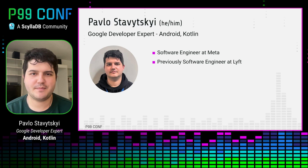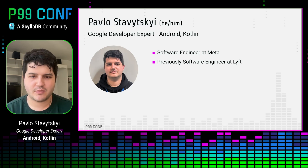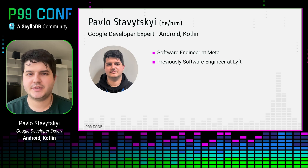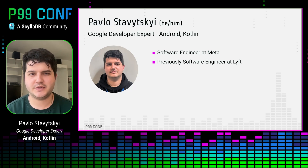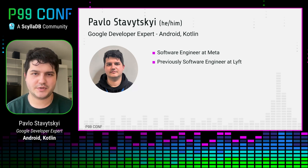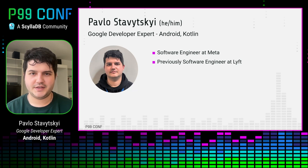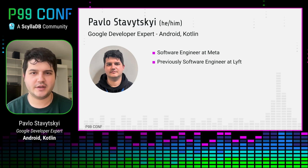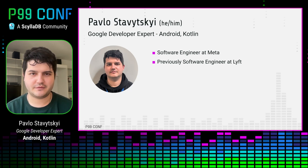A few words about me. I'm Pavlo, I'm a Google Developer Expert for Android and Kotlin. Currently, I work at Meta at Reality Labs, doing different stuff regarding virtual reality. However, the contents of this talk are related to one of my previous jobs at Lyft, where I was part of the mobile infrastructure team, working on monitoring different types of performance metrics, including memory usage.